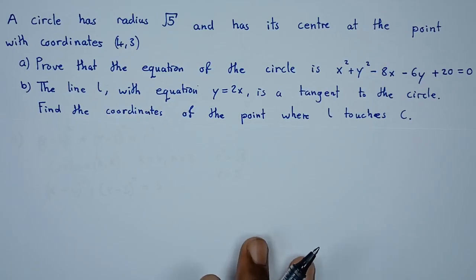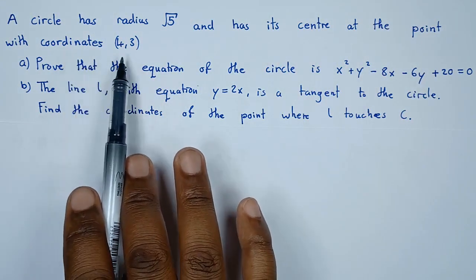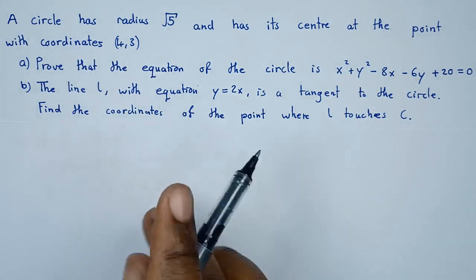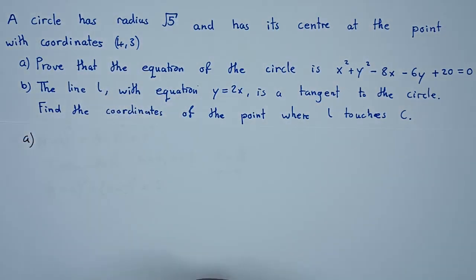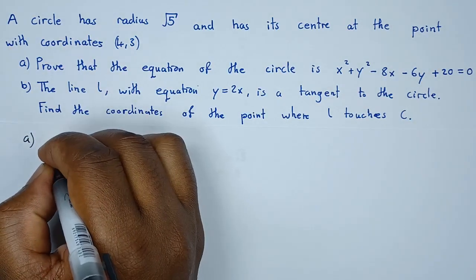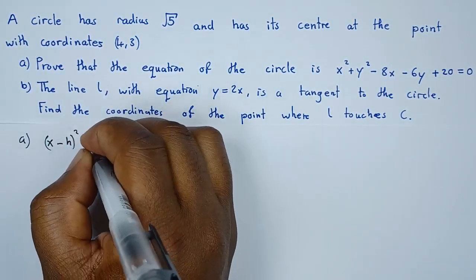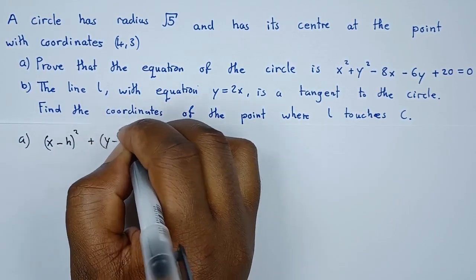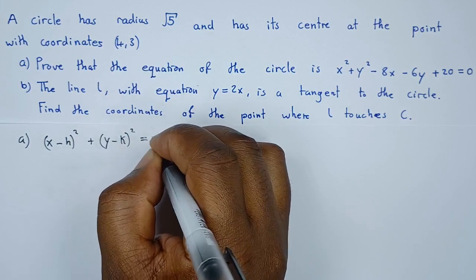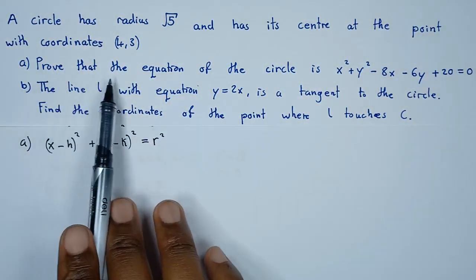Let's see how we can solve this particular question. We have a circle which has a radius of root 5 and its center is at the coordinates (4, 3). The general form of an equation is given by x minus h in brackets squared plus y minus k in brackets squared equals R squared.